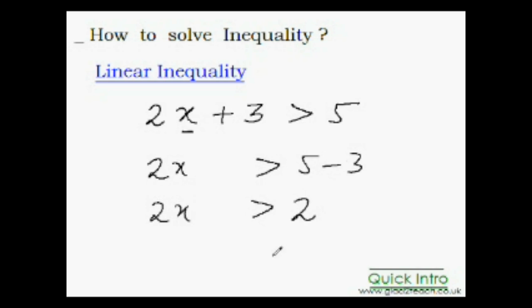So 2x greater than 5 minus 3. So 2x would be greater than what? 5 minus 3 is 2. Now divide both the sides by 2 to get rid of this 2 from this side. So I will divide this side by 2 and I also divide this side by 2. So this thing goes away. 2 times 1 is 2 and this is 2 times 1 is 2. So what do you have here? x is greater than 1. That's your answer. That's your solution.